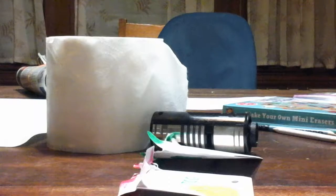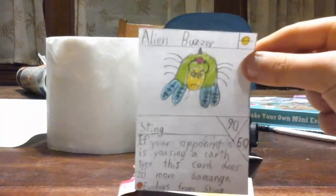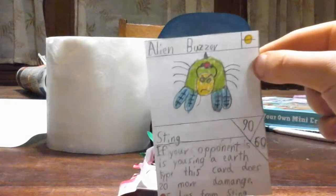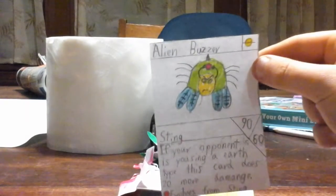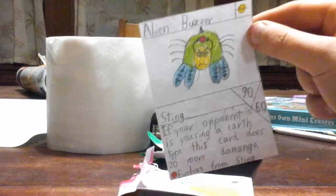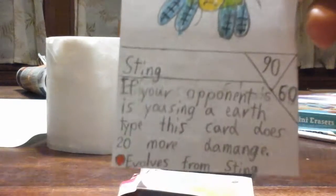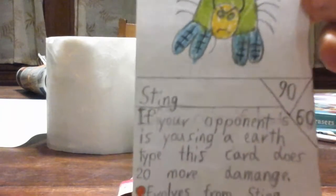Oh nice one, Alien Buzzer. He's a space type. This is probably the best card I'm going to get in this pack. He's possessed, as you can see. I got, it's my third evolution, Alien B and then it's Buzzer, No Sting, and then Sting. And he has the same special ability as Sting. 90 health, 60 damage, he's just a bit more health. If your opponent is using that earth type, this card does 20 more damage. Evolves from Sting, he's a rare. That's a nice one.